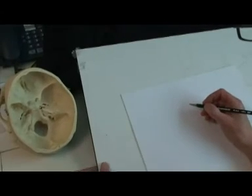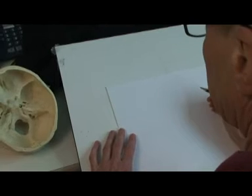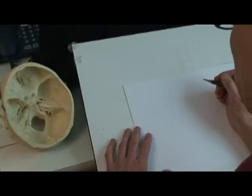I'm going to draw a map of the temporal bone from a superior view. We're going to start by first drawing a grid, a basic grid.